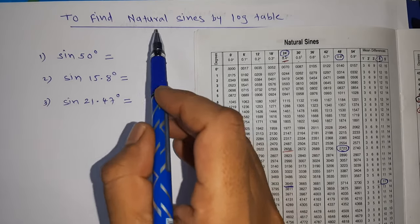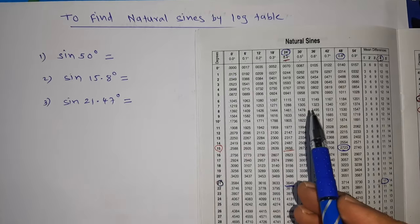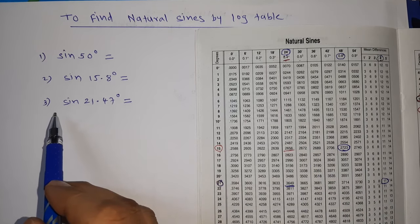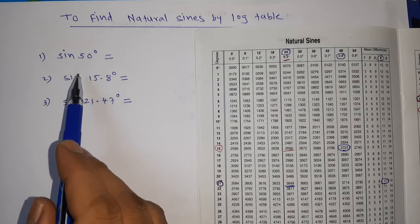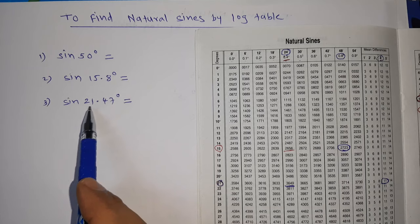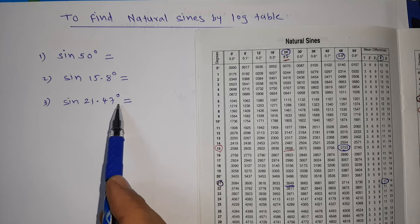Now let us see students how to find the natural sines by using a log table. We will see three examples: sine 50°, sine 15.8°, and sine 21.47°.